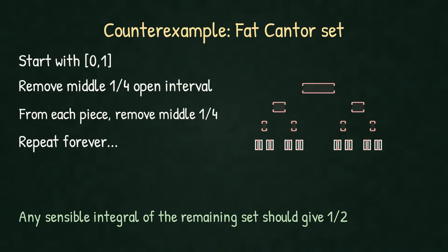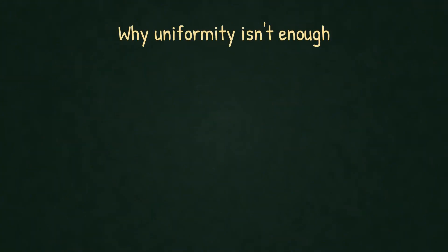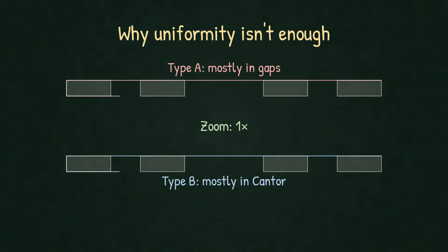Any sensible integral should give us 1/2. But, and here's the problem, this set is not Riemann integrable, even almost everywhere. Here's the issue. We can create two different uniform sequences that give completely different averages for the fat Cantor set. For example, type A has points mostly in the gaps and converges here to 0.2, and type B has points mostly in the Cantor pieces and converges here to 0.8.